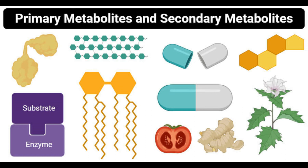This video covers primary versus secondary metabolites definitions, 12 differences, and examples. Primary metabolites are the compounds that are directly involved in the metabolic pathways of an organism necessary for its growth, development, and reproduction.